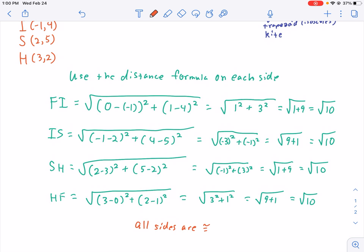So, since all the sides are congruent, what are our options? I hope you said rhombus or square.